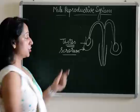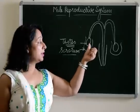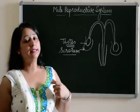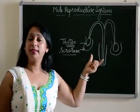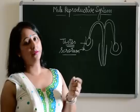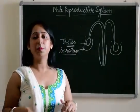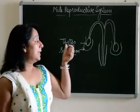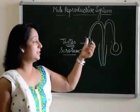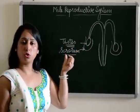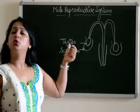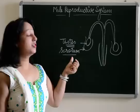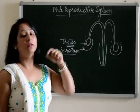The function of the scrotum is to cover the testes and protect them from mechanical injury or any damage. Both testes are present outside the abdomen of males — not inside the body. The function of testes is to produce sperms and to produce testosterone. The function of the scrotum is to protect the testes from any damage or injury.